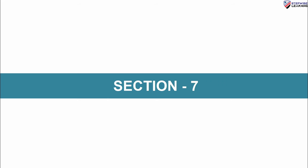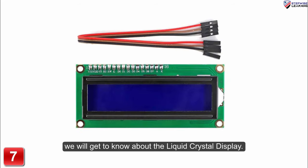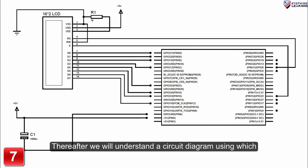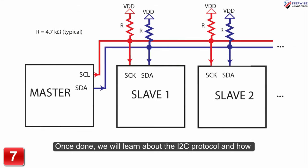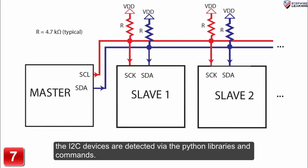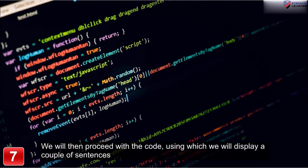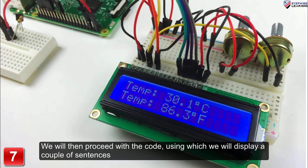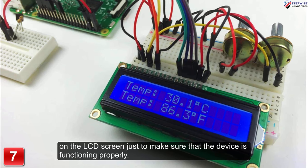In the seventh section, we will get to know about the liquid crystal display. Thereafter, we will understand a circuit diagram using which we can connect the LCD module with the Raspberry Pi. Once done, we will learn about the I2C protocol and how the I2C devices are detected via the Python libraries and commands. We will then proceed with the code, using which we will display a couple of sentences on the LCD screen just to make sure that the device is functioning properly.